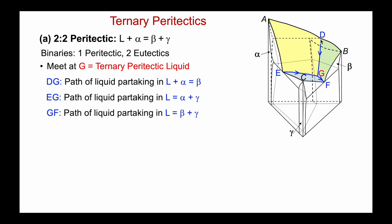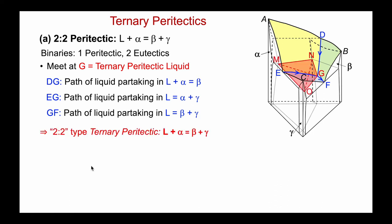Notice the direction of the arrows, which indicate decreasing temperature. For two of these binaries the arrows move downhill, meeting at G — but out of G, the eutectic valley going into the BC binary is also running downhill. So we have two liquid valleys coming in and one coming out. This is called a 2-2 type ternary peritectic, and the equilibrium is liquid plus alpha in equilibrium with beta plus gamma.